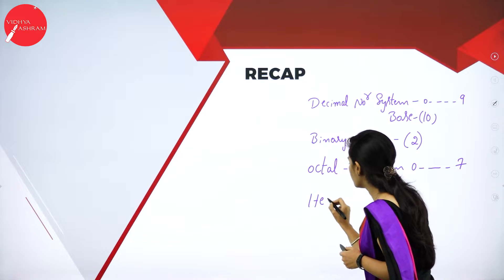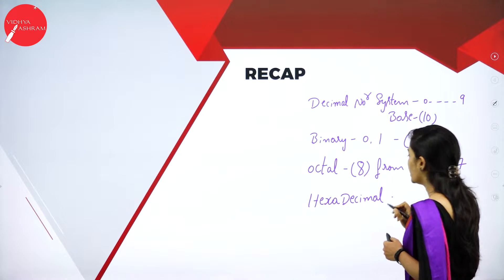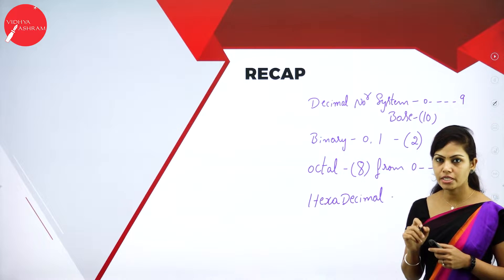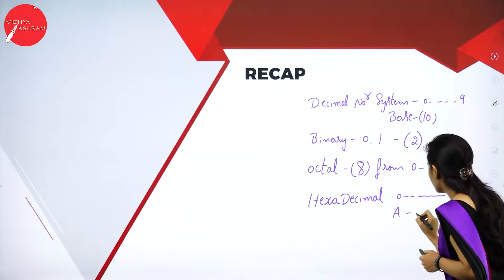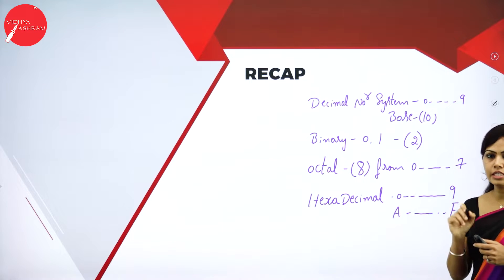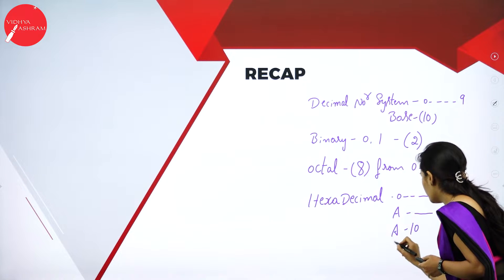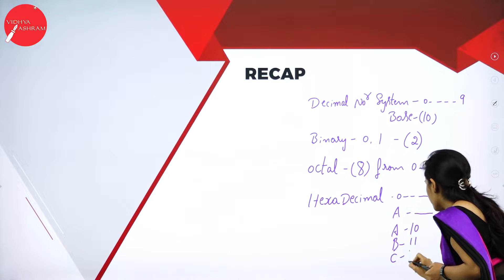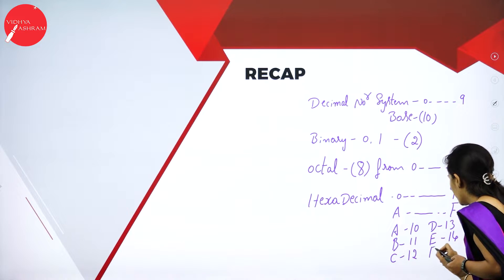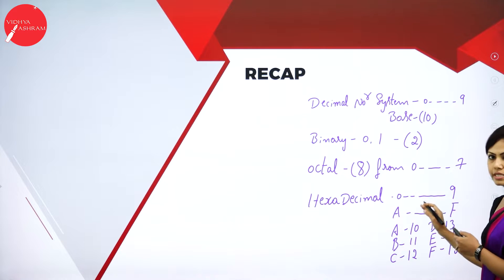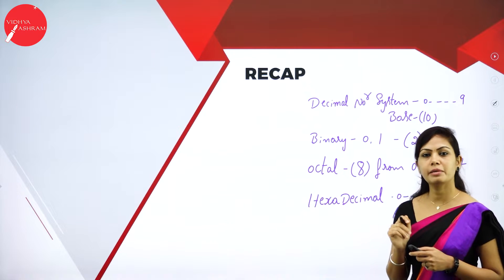Next we have hexadecimal number system. In hexadecimal number system, we have 16 digits — that is from 0 to 9, and A to F letters. A represents 10, B represents 11, C represents 12. So hexadecimal number system consists of 0 to 9 numbers and A to F letters. These are the types we studied in the previous session.